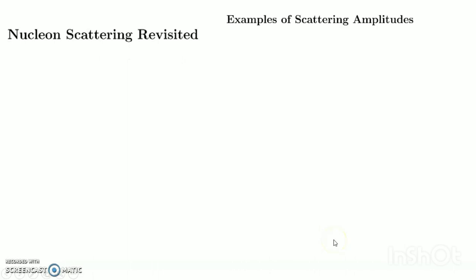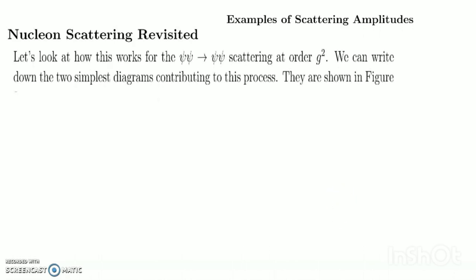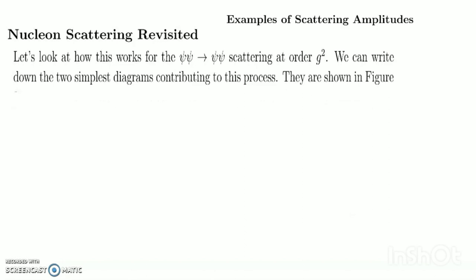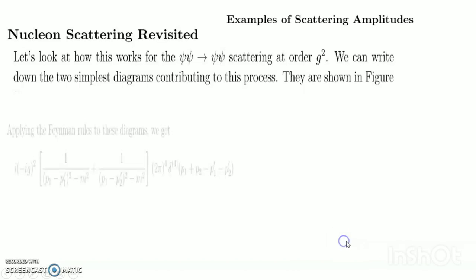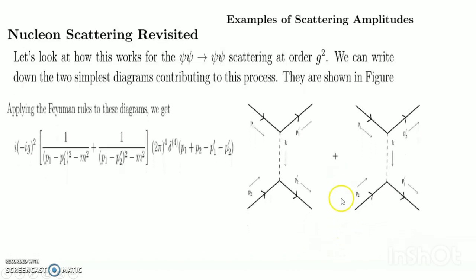Let's apply the Feynman rules to compute the amplitudes for various processes. We start with something familiar: nucleon scattering revisited. Let's look at how this works for ψψ → ψψ scattering at order G², where G² is the coupling constant. We can write down the two simplest diagrams contributing to this process — these are the two lowest order Feynman diagrams for nucleon scattering.